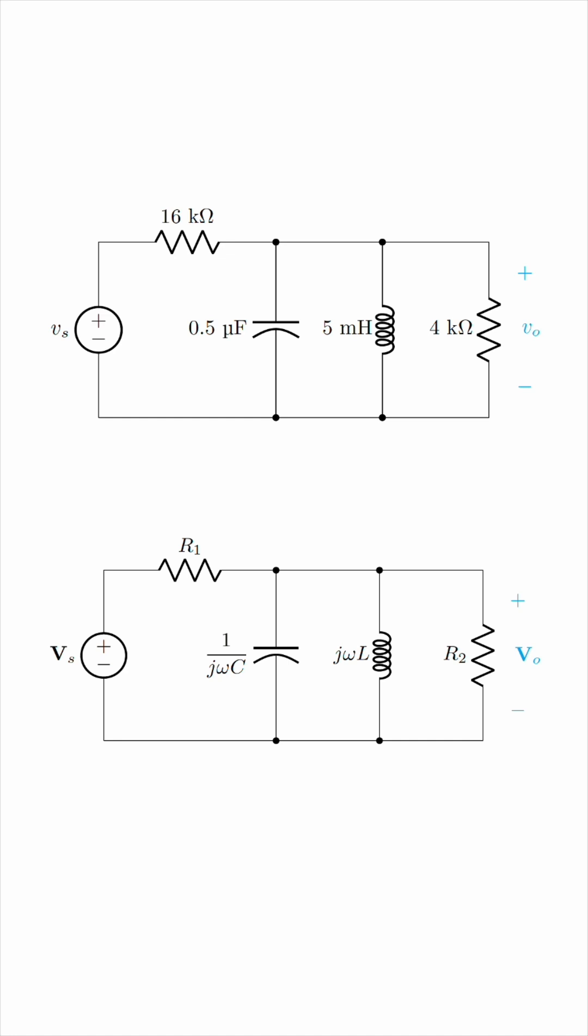Resistors stay the same. The impedance of a capacitor is 1 over j omega C, and the impedance of an inductor is j omega L. I'm not going to plug in any values just yet, I'm going to leave it general, and then we'll plug in the numbers at the end.